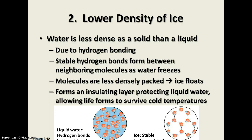In ice, the hydrogen bonds form as stable bonds because the molecules are moving around less — whenever you cool something, the molecules move more slowly. As they slow down, the hydrogen bonds that form between water molecules are stable. As a result, they don't break and reform constantly like they do in liquid water, so the molecules form a nice hexagonal pattern — as you can see in the diagram — because of the shape of the water molecule and where the charges are located. The molecules are more evenly spaced and less densely packed, and that's what makes ice less dense, which means ice floats.